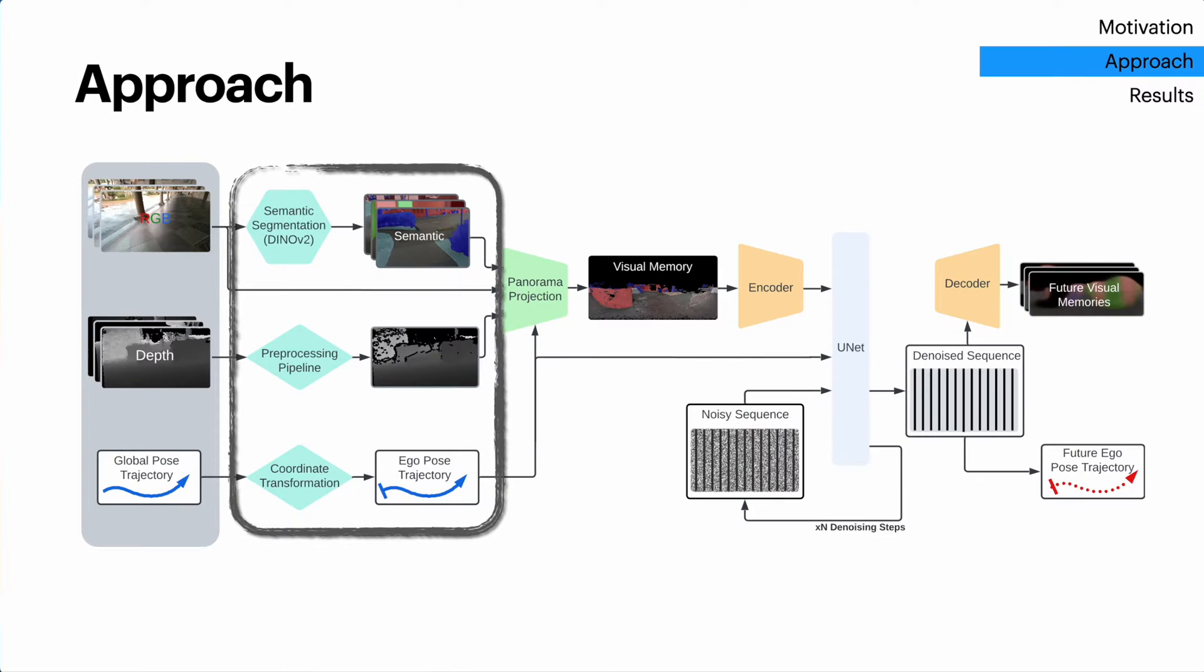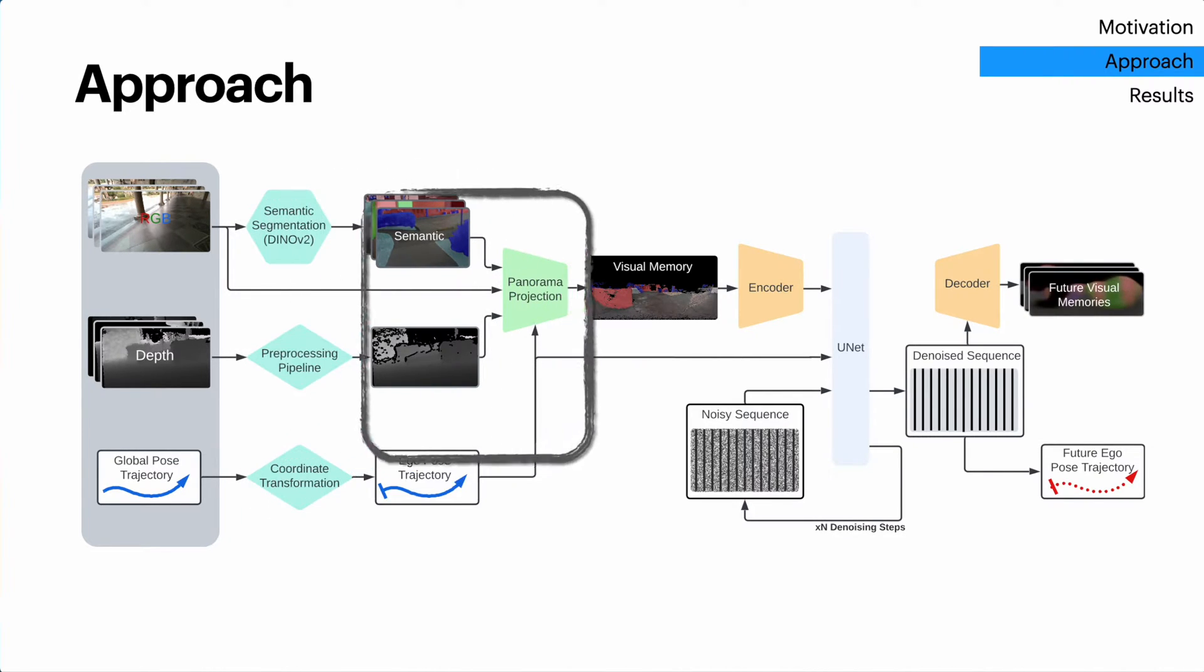We clean this raw data, label the semantics, and distill it into a compact representation we call the visual memory. This visual memory is like a snapshot that encodes key information about the environment layout and semantics from the human's perspective over time.